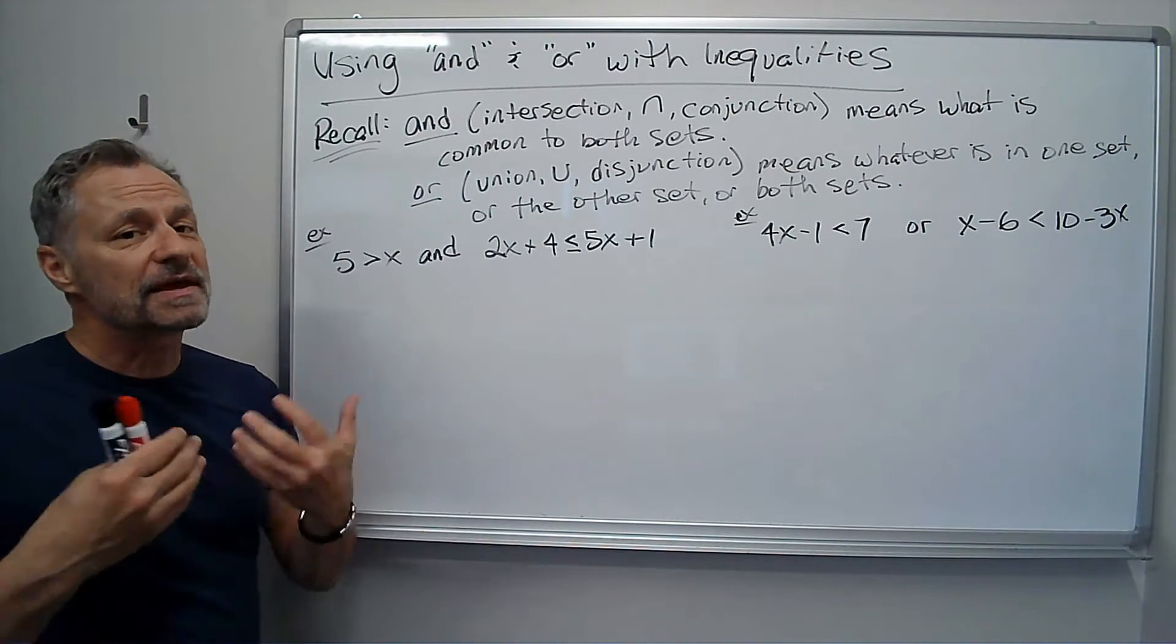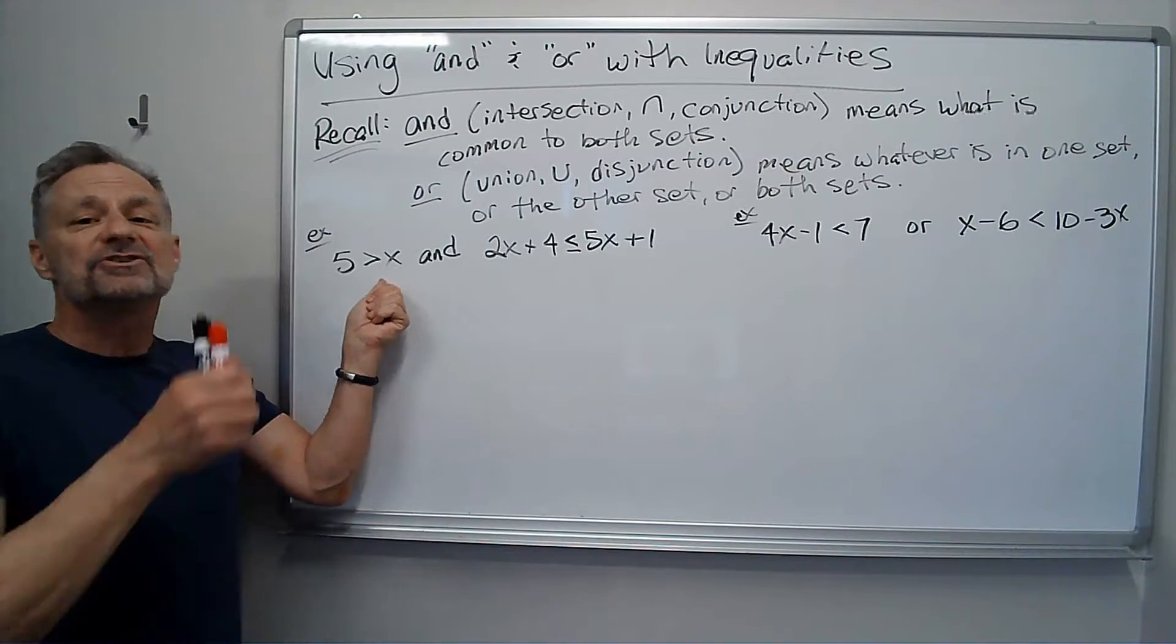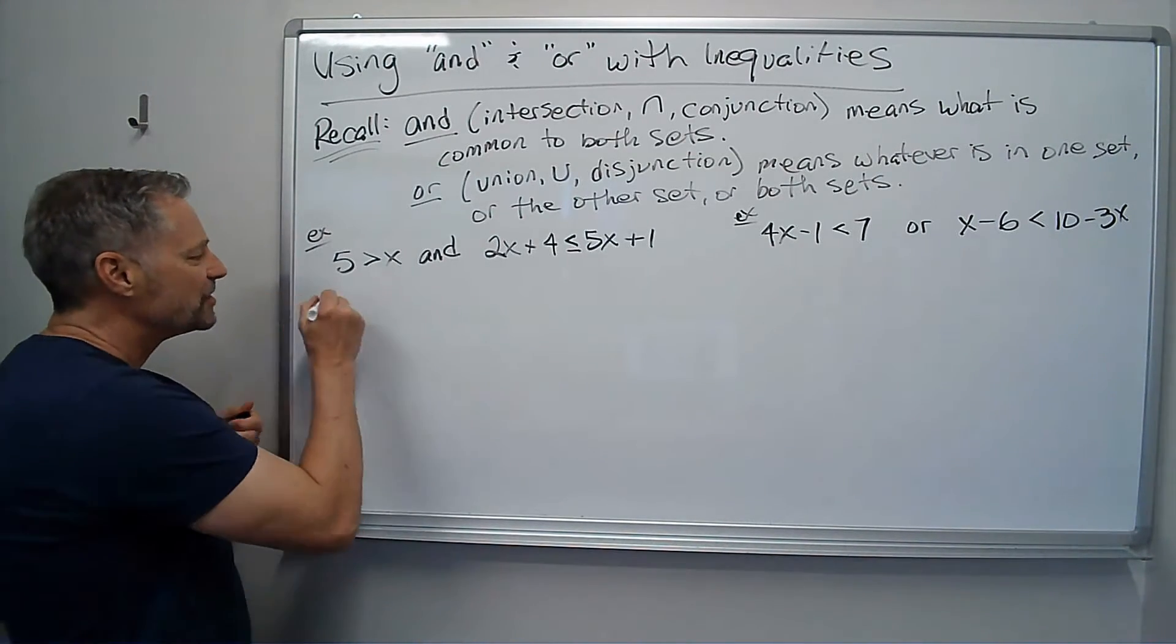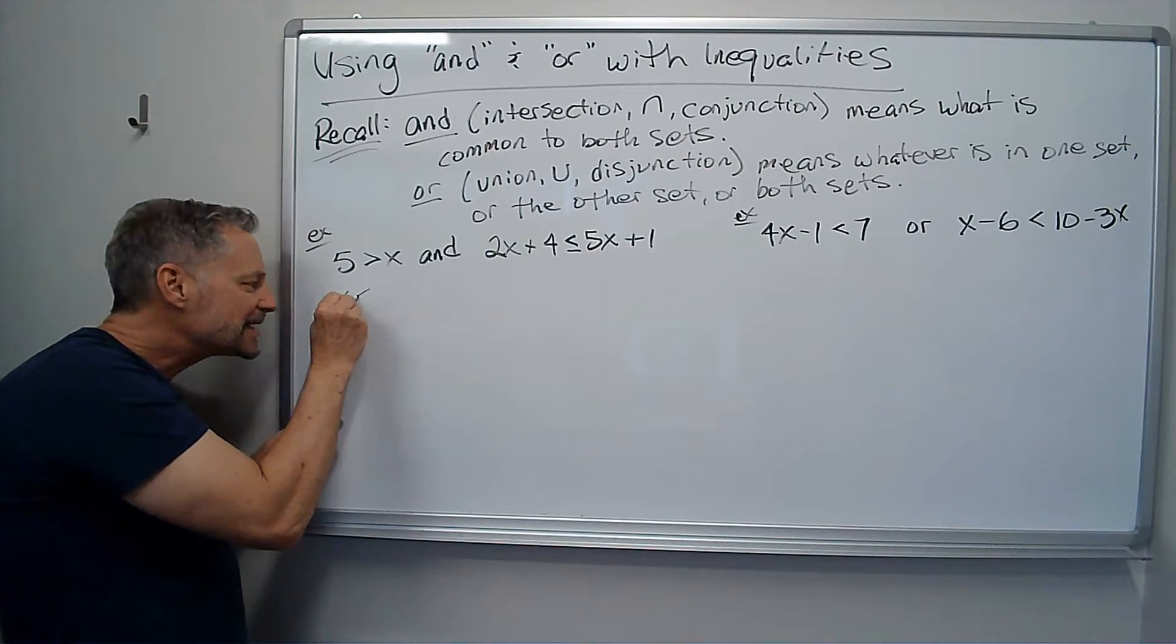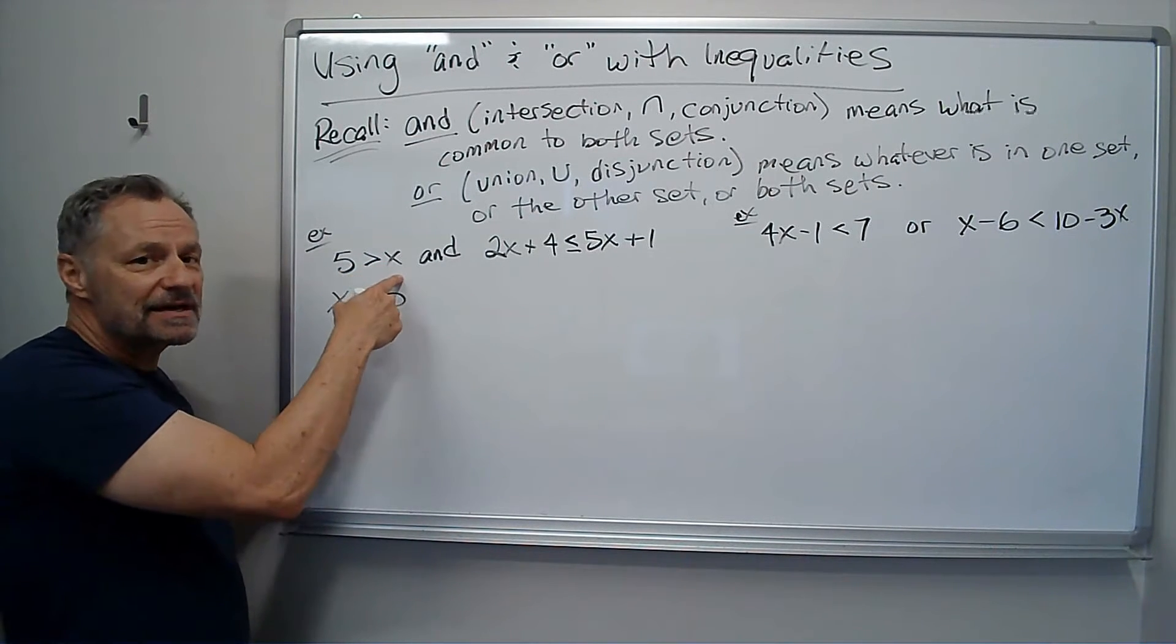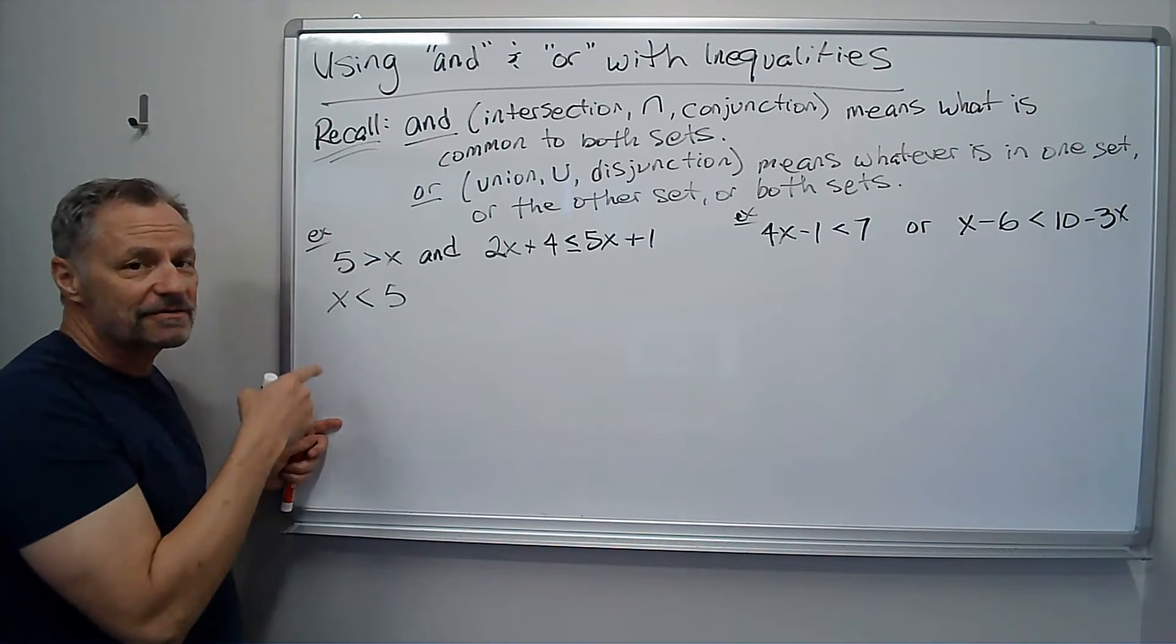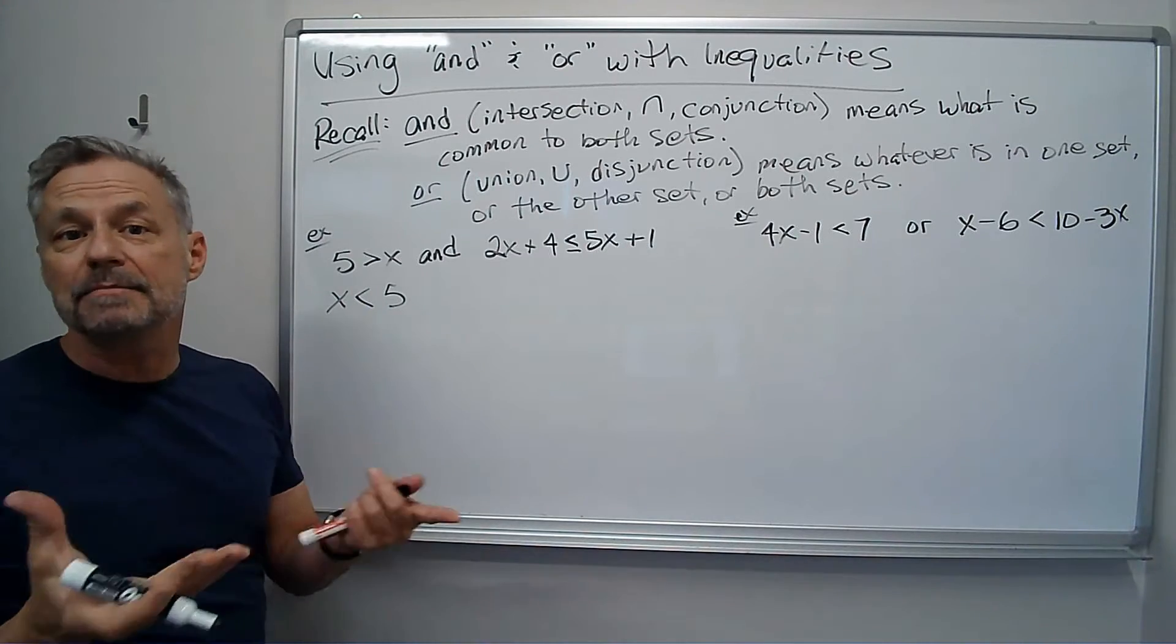I have found for myself, and my students seem to be under the impression, that it's easier to understand if x is on the left hand side. So I'm going to rewrite this one with x on the left. Notice it's pointing towards the x. I'm going to keep it pointing at the x. 5 is greater than x means x is less than 5. Or you can read it this way, x is less than 5.